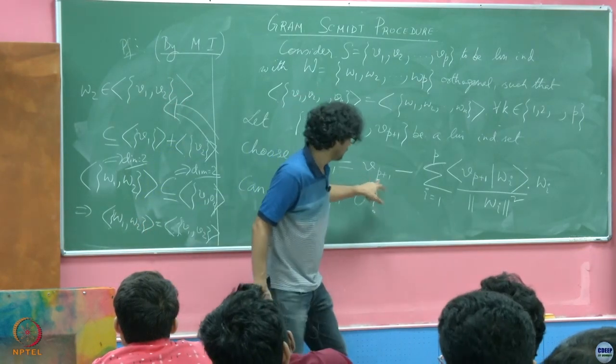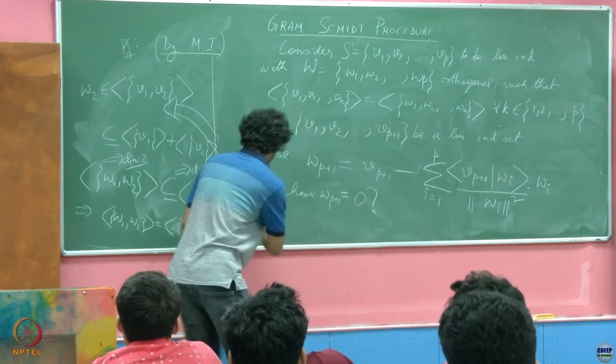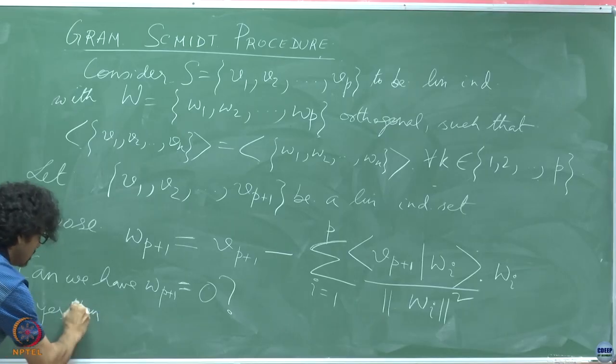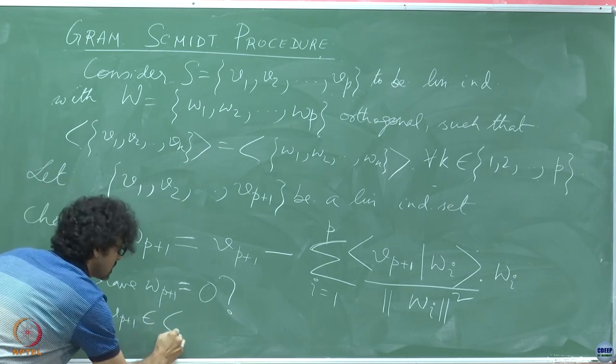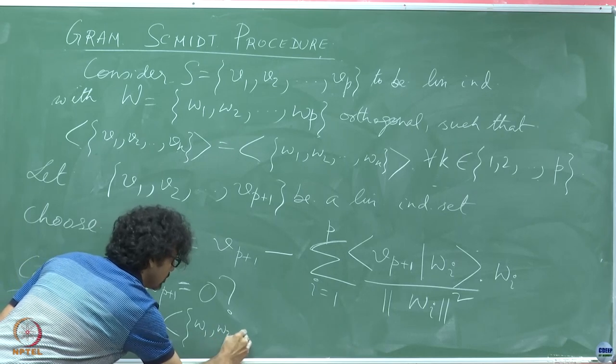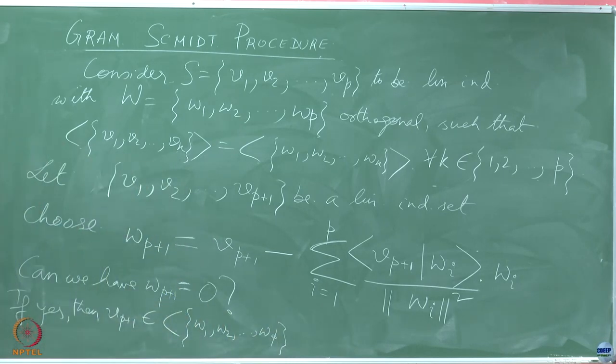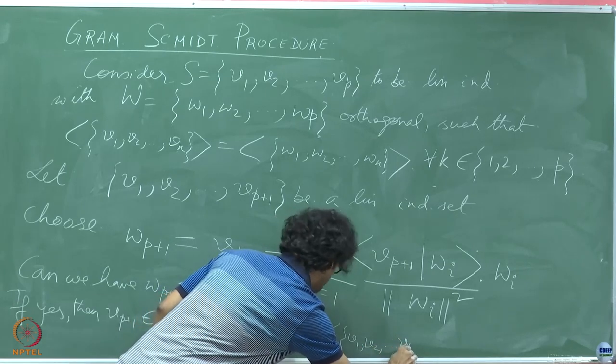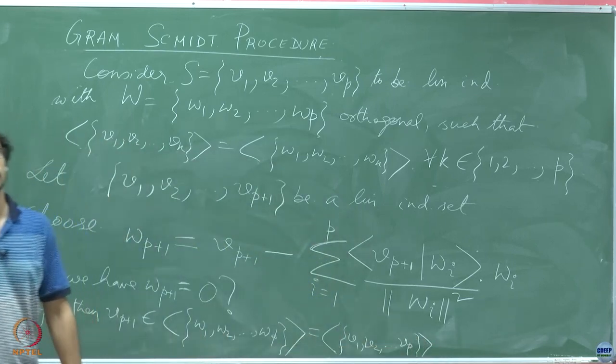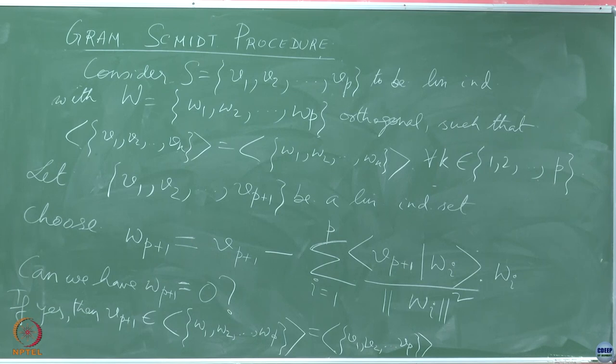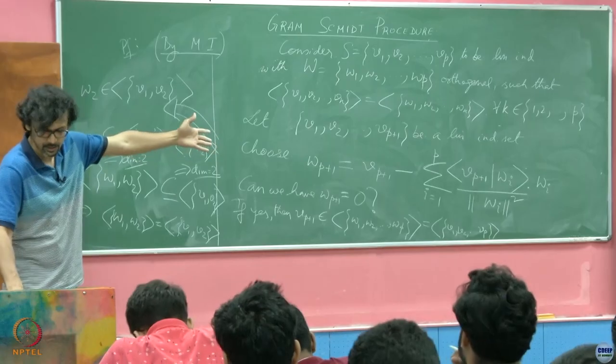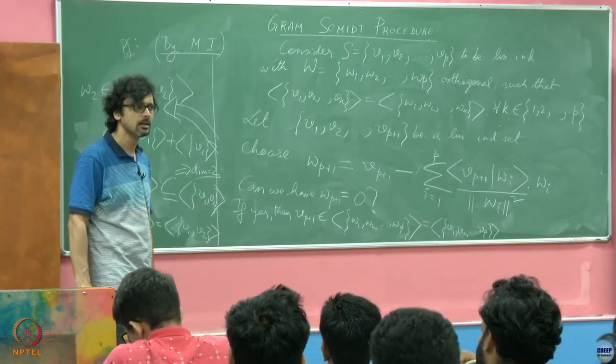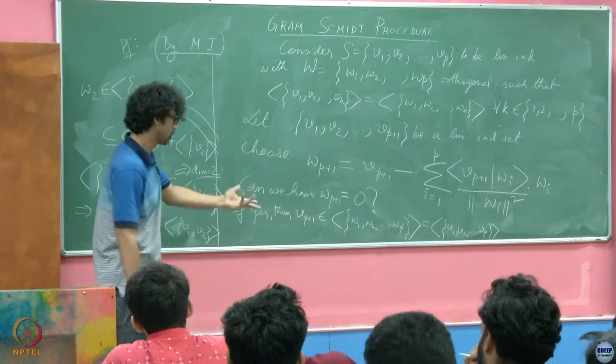V P plus 1 is equal to this, that means, if yes, then V P plus 1 belongs to span of W 1, W 2 till W P, is it not? But what is that span equal to? That is also equal to the span of V 1, V 2 till V P. What would that mean? This P plus first fellow in the set of V's adds nothing, it is already contained in the span of V 1 through V P. Can it be linearly independent then? Of course not, because V P plus 1 has a representation in terms of the linear combination of V 1 through V P, so there is a non-trivial linear combination that takes them to 0.